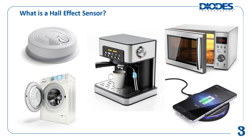Washing machines can use Hall Effect Sensors to detect if its door is open or closed before beginning its wash cycle. They can be used to detect the rotational position of the washing machine's control knob so the machine knows the user-selected wash cycle. Hall Effect Sensors can also be used to know the rotational speed of the washing machine drum, since different wash cycles may require the drum to spin at different speeds.